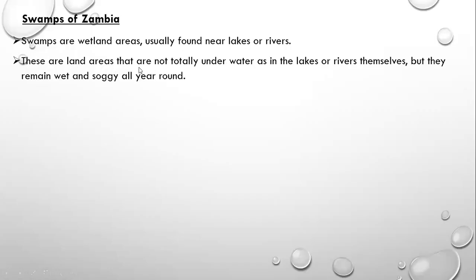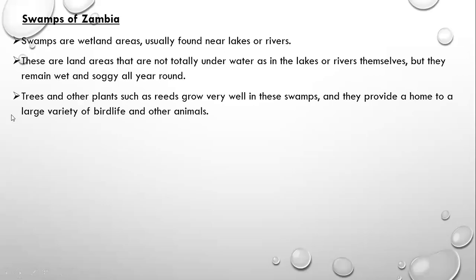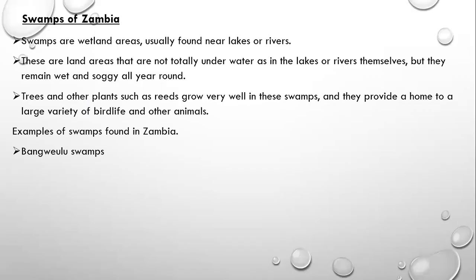Swamps are wetland areas usually found near lakes or rivers. These are land areas that are not totally underwater like lakes or rivers, but they remain wet and soggy all year round — they are permanently watery. Trees and plants such as reeds grow very well in swamps, and they provide a home to a variety of bird life and other animals. Examples of swamps in Zambia include Bangweulu Swamps, Lukanga Swamps, Usanga Swamps, and Mweru Wantipa Swamps.